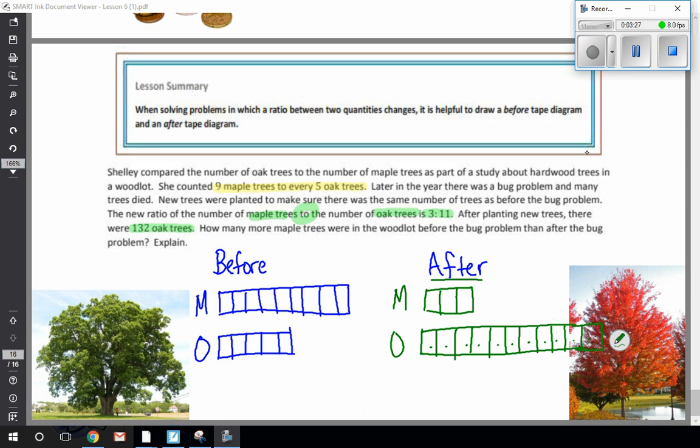So total, I still have nine plus five equals fourteen before. And after, I had three to eleven, which is three plus eleven, which is also fourteen total. So I'm dealing with the same equal parts of the ratios.